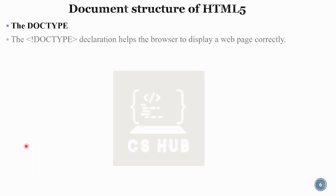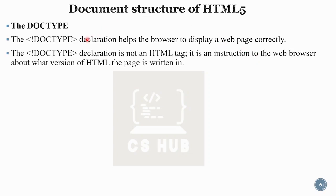The DOCTYPE declaration helps a browser to display a web page correctly. DOCTYPE is not an HTML tag — it is an instruction to the web browser about what version of HTML the page is written in. It provides information about the version of HTML so the browser can process the document correctly.